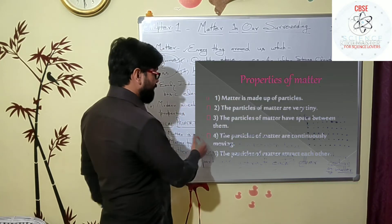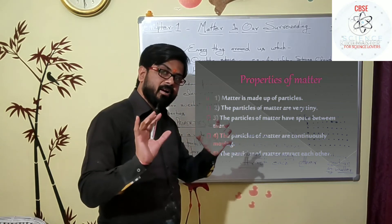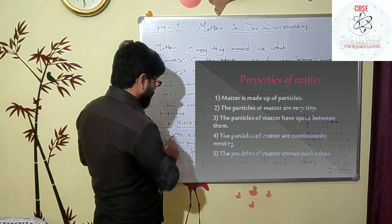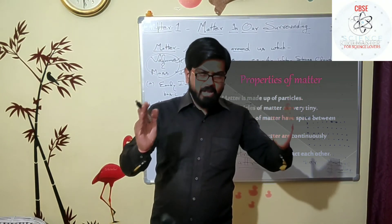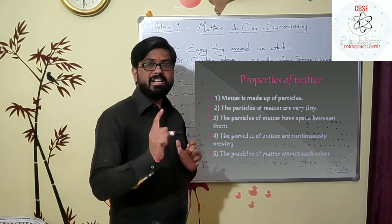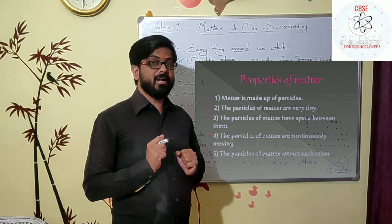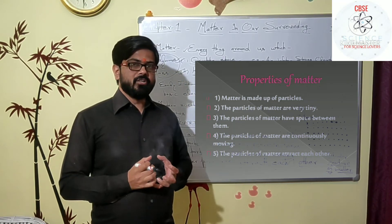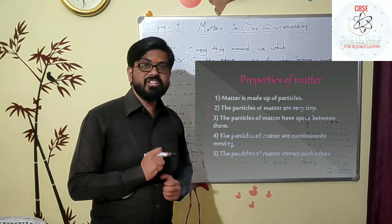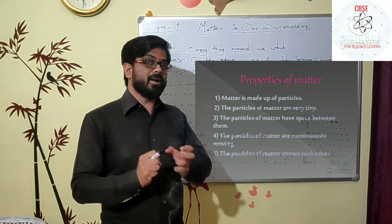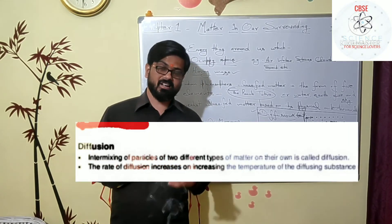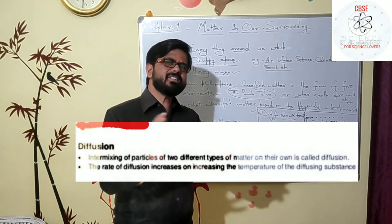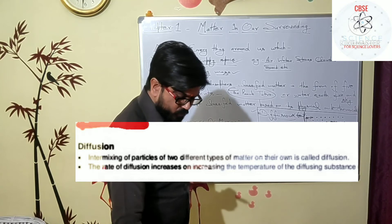Let me explain the physical properties once again. Matter is made up of small, tiny particles. All matter particles have interparticular space in between them. Matter particles are continuously moving due to the kinetic energy in them, and this kinetic energy is called interparticular energy. By this energy, diffusion of matter is possible. Diffusion is the intermixing of two matter particles.